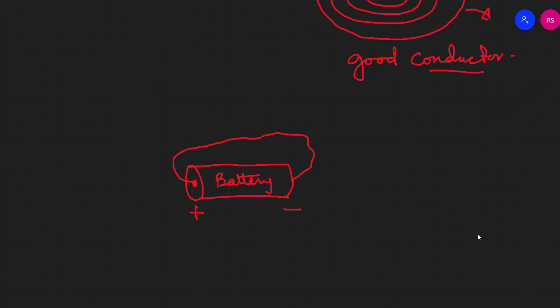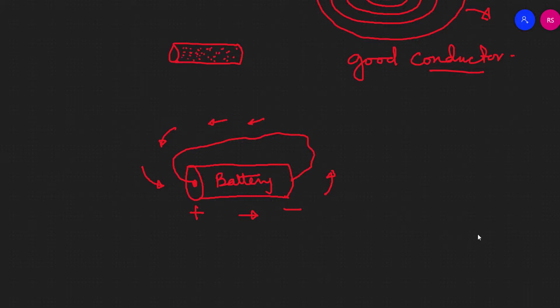An example of current flow is that the electron moves like a chain. If the electron moves in a different direction, we will be able to see the direction. The electron moves in the direction we consider, and the battery is what drives the movement of the electrons.